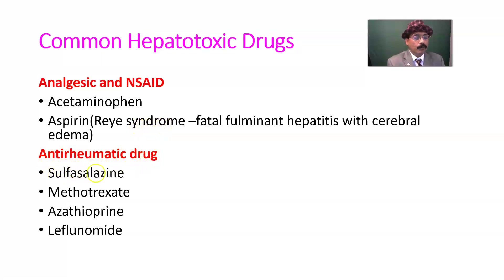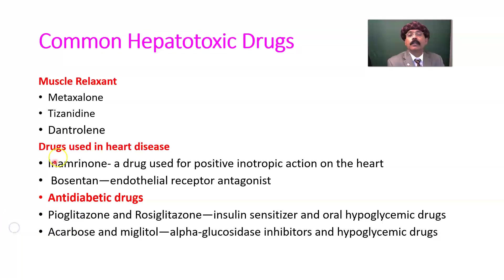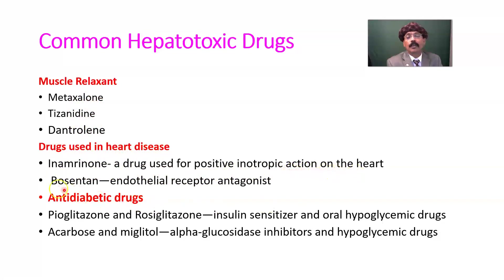Anti-rheumatic drugs — all of these drugs modify the disease process and may lead to liver toxicity and liver damage. Muscle relaxants like metaxalone and tizanidine may lead to hepatotoxicity. Drugs used in heart disease, such as amrinone — a drug used for positive inotropic action on the heart — and bosentan, an endothelin receptor antagonist, are also potentially hepatotoxic drugs.